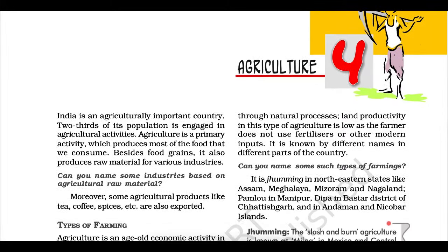Plantation is also a type of commercial farming. In this type of farming, a single crop is grown on a large area. The plantation has an interface of agriculture and industry. Plantations cover large tracts of land using capital-intensive inputs with the help of migrant laborers. All the produce is used as raw material in respective industries. In India, tea, coffee, rubber, sugarcane, banana, etc. are important plantation crops. Tea in Assam and North Bengal, coffee in Karnataka are some important plantation crops grown in these states. Since the production is mainly for market, a well-developed network of transport and communication, connecting the plantation areas, processing industries, and market plays an important role in the development of plantation.